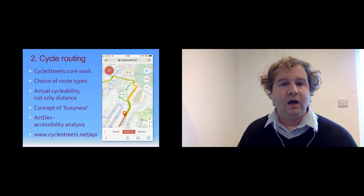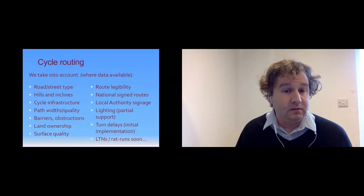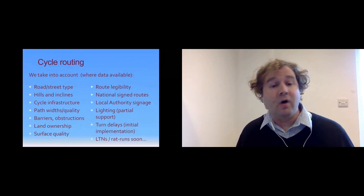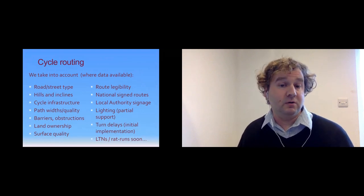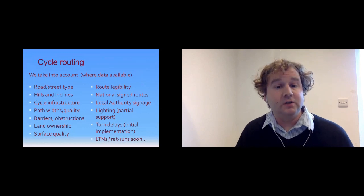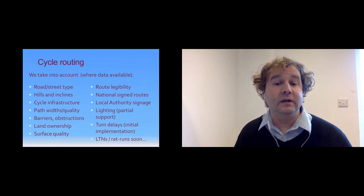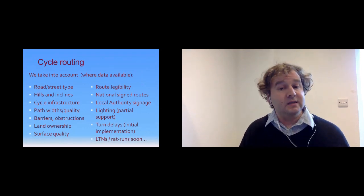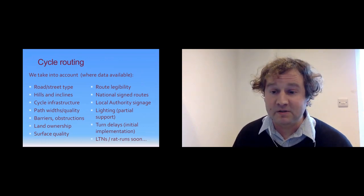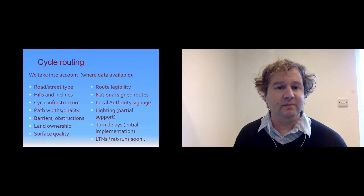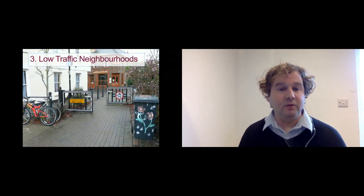Our routing takes into account a whole range of factors: street type, hills, presence and width of cycling infrastructure — a very narrow cycle lane actually gets a negative score unlike Google — barriers and obstructions, landownership, surface quality, whether it's part of a national or local signed route, lighting, turn delay at junctions. A new thing we're shortly going to add is low traffic neighborhoods and rat runs.